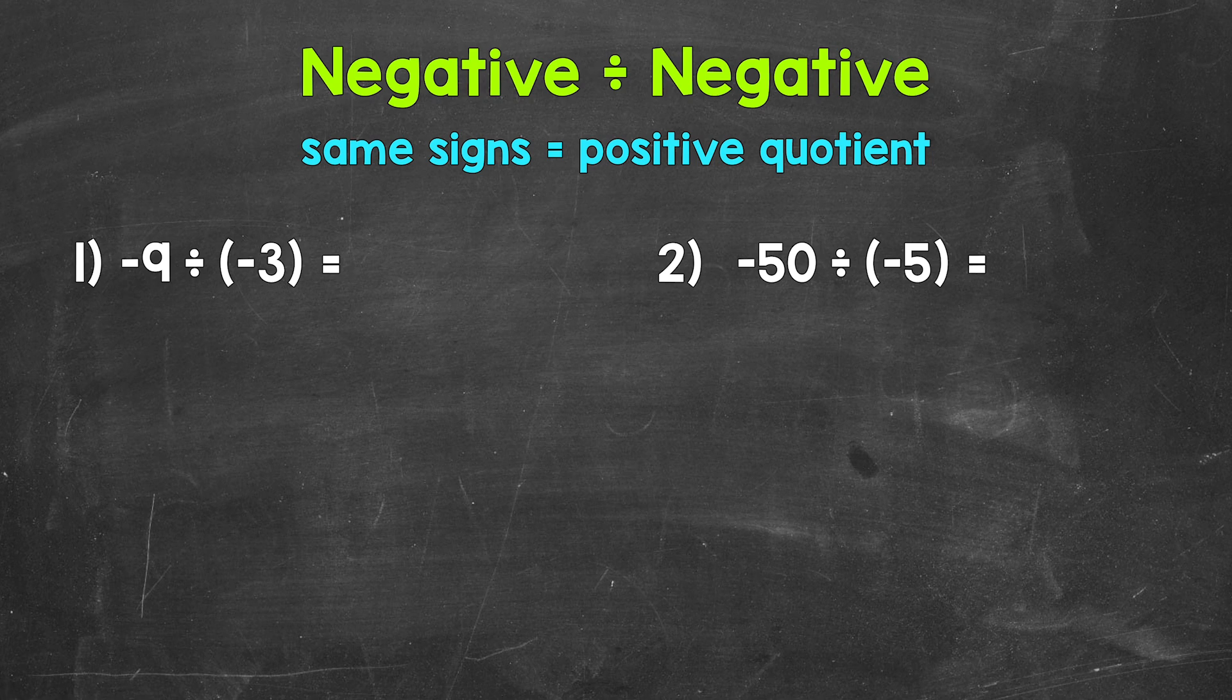Let's think of this as 9 divided by 3, which is 3. And again, this is going to be positive because we had the same signs. A negative divided by a negative. Our final answer, positive 3.